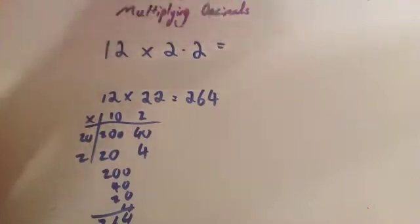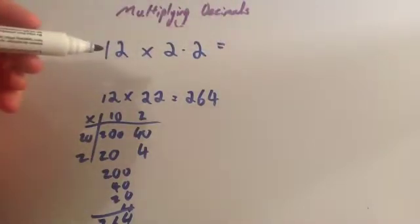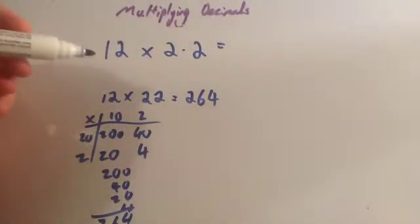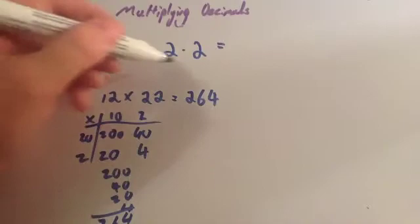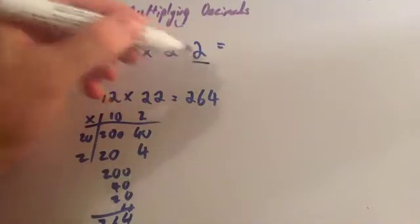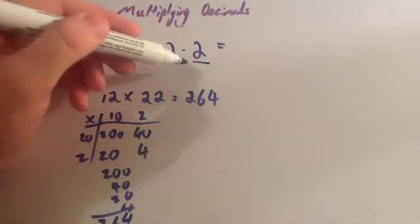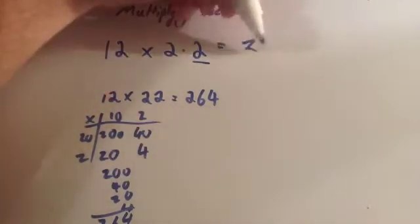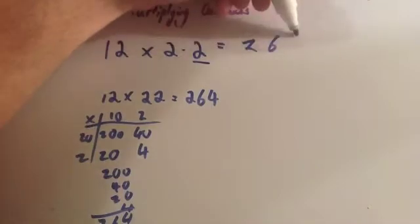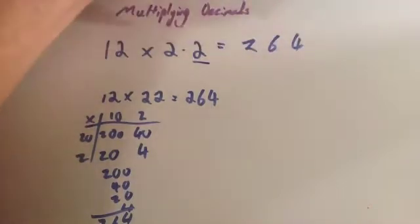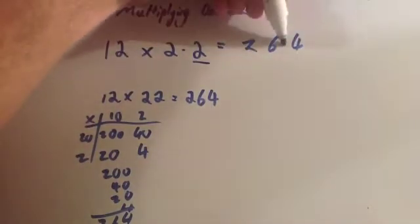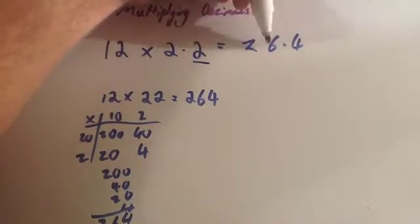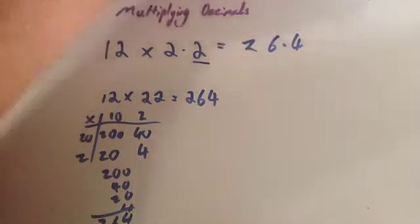Now we need to put the decimal point back in. Let's count how many digits are after the decimal point in the question. In the question there's only one digit after the decimal point. That means in the answer, only one digit will be after the decimal point. So it would be 26.4.